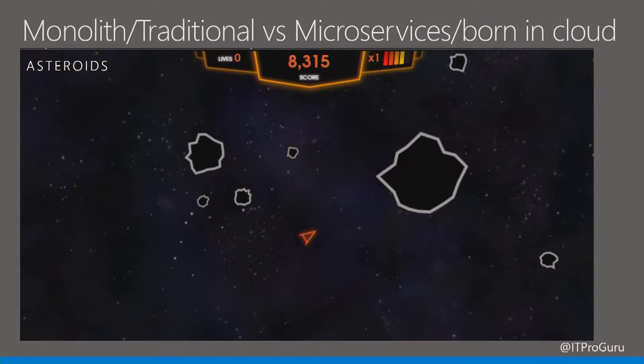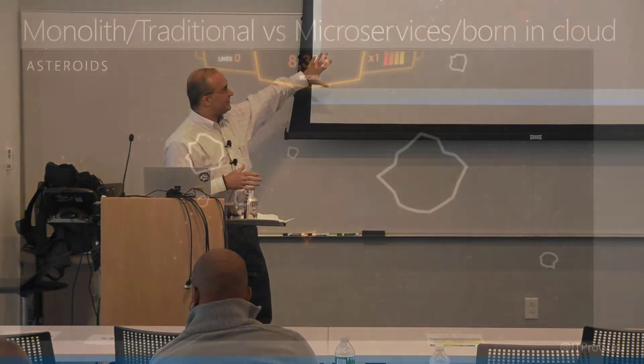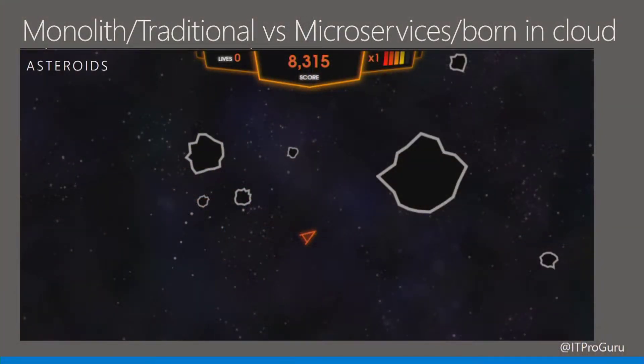Quickly on monolithic traditional versus microservices born in the cloud: containers are what's next, but what's next after that? Microservices. Not a lot of people in this room are using containers yet, but it's relatively new. Microservices is what's after containers — it's the next leg. Think about the Asteroids game: in a monolithic application, everything happens inside one executable. In a microservices environment, each rock is a microservice.